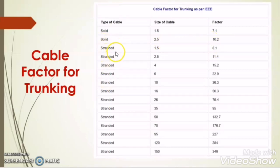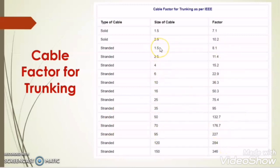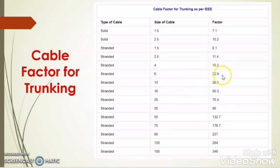In the same way, for standard type wires or cables of different sizes, there are factors mentioned in this table. For 1.5mm standard cable, the factor is 8.1. For 2.5mm, the factor is 11.4. For 4mm, 15.2. For 6mm, 22.9. Likewise, for 150 sq mm, the factor is 346.